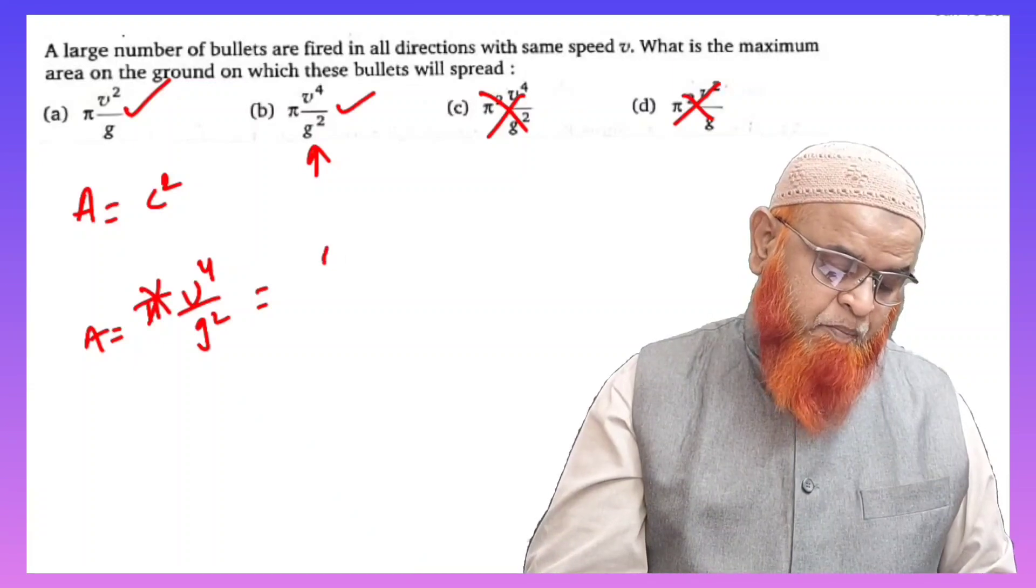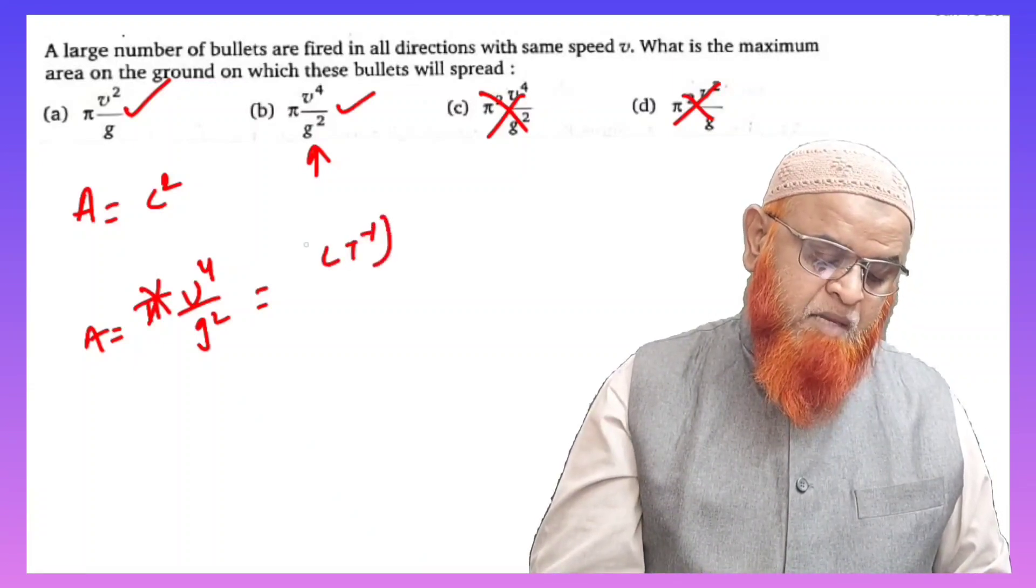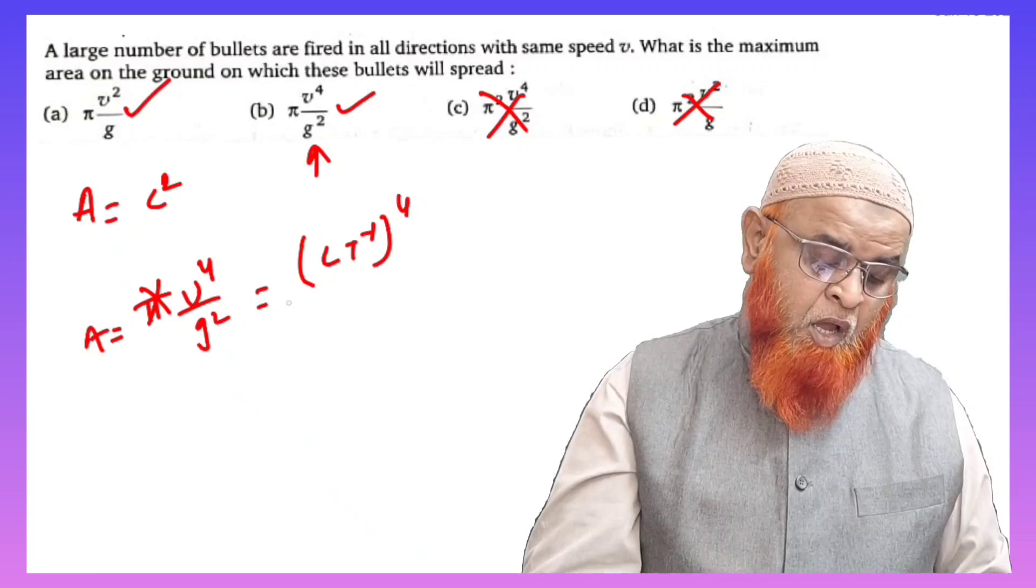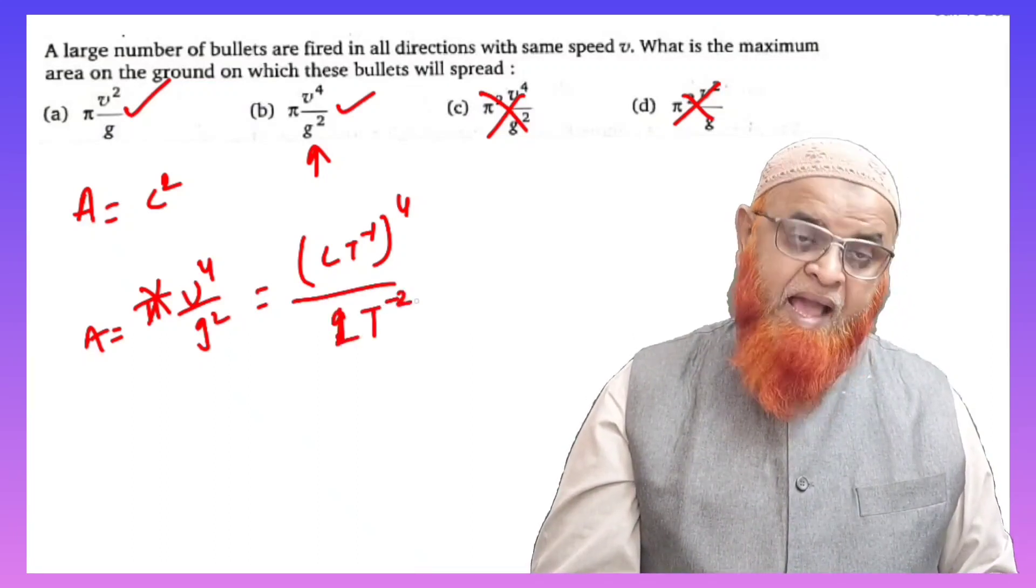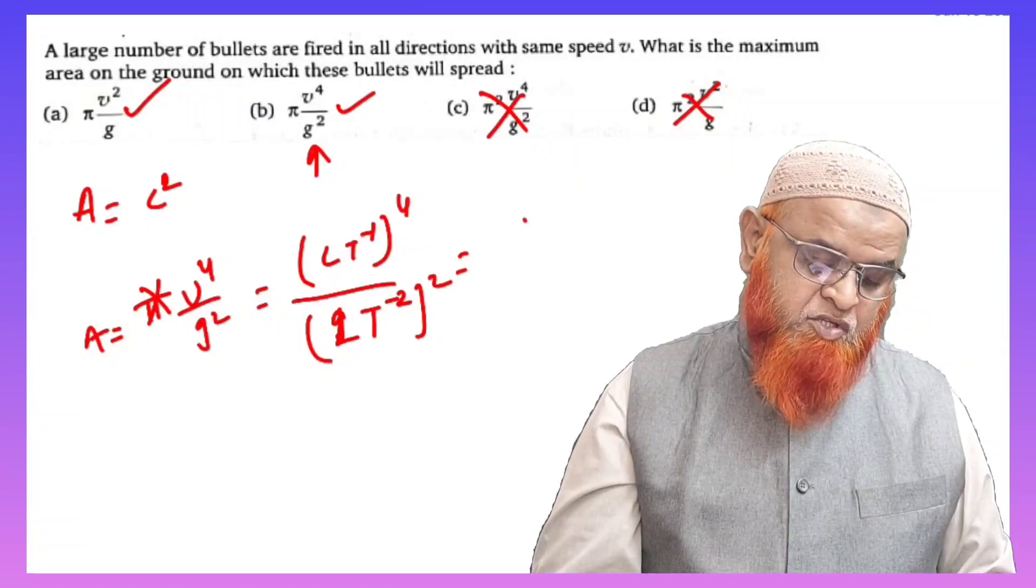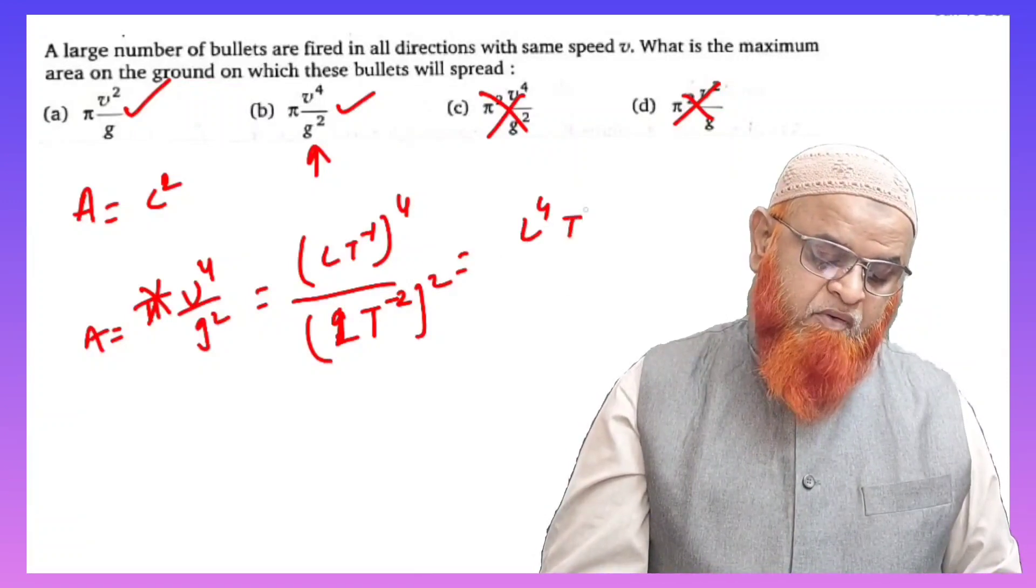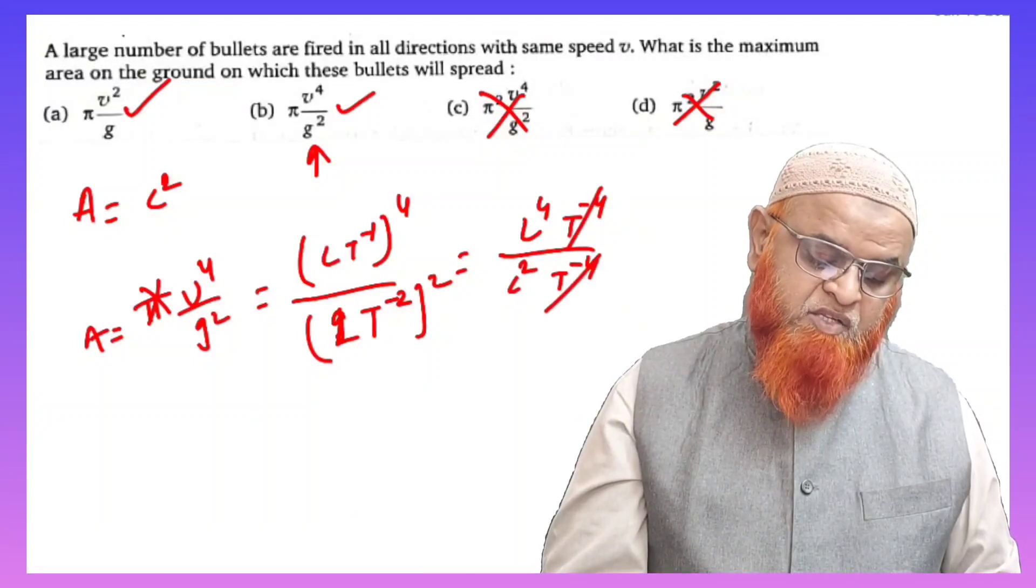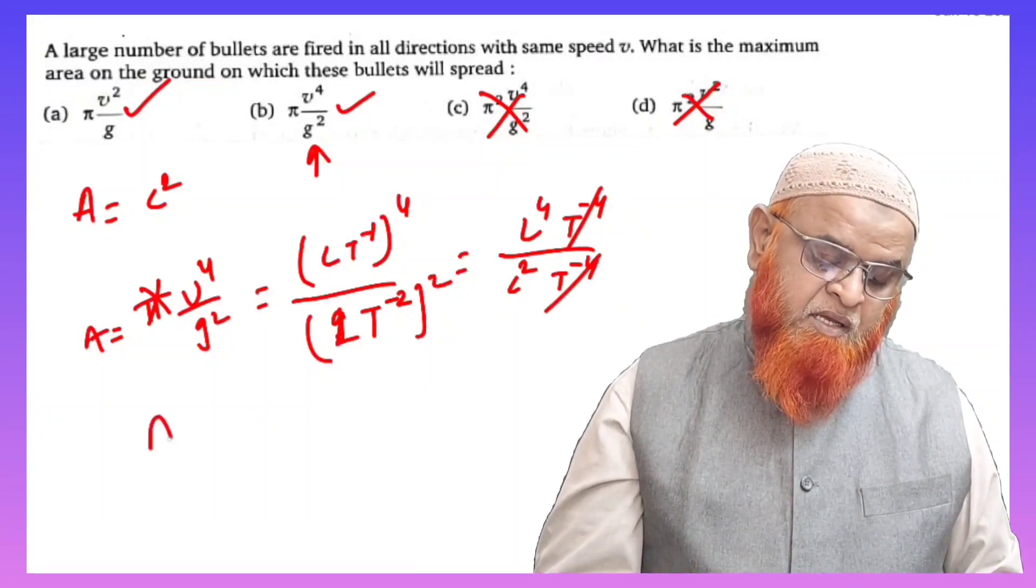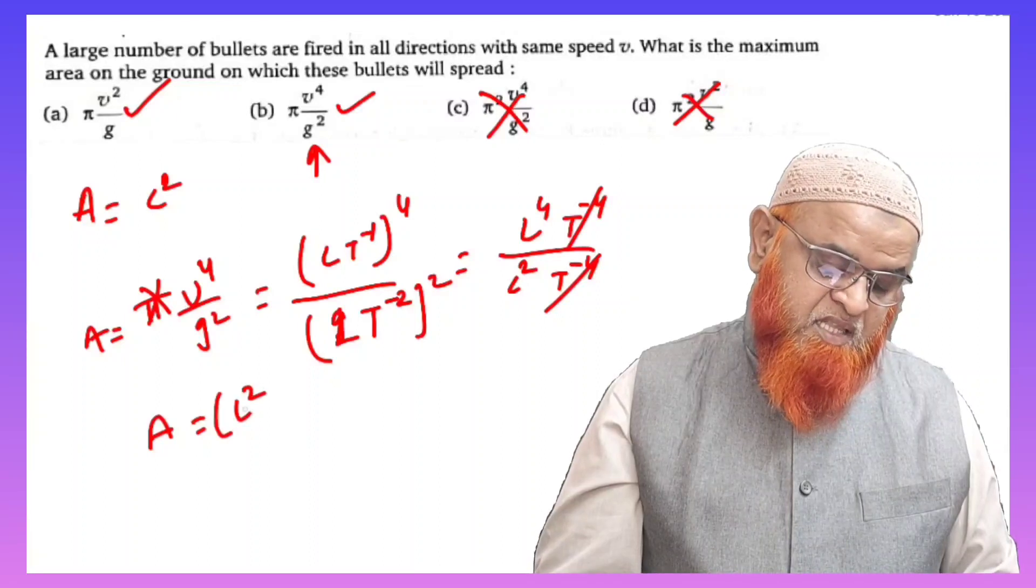So π does not have any dimensions. LT⁻¹ is the dimensional formula for velocity, whole to the power of 4, divided by g². Here g is nothing but acceleration, which is LT⁻². So we get L⁴T⁻⁴ divided by L²T⁻⁴.